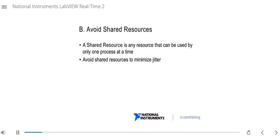What is a shared resource? A shared resource is any resource that can be used by only one process at a time. This is something that if two processes wish to use simultaneously, one of them has to wait.